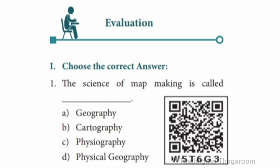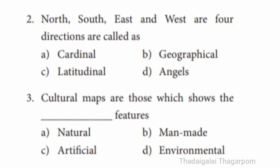Choose the correct answer. Question 1: The science of map making is called – Geography, Cartography, Physiography, or Physical Geography. The correct answer is Cartography. The science of map making is called Cartography.